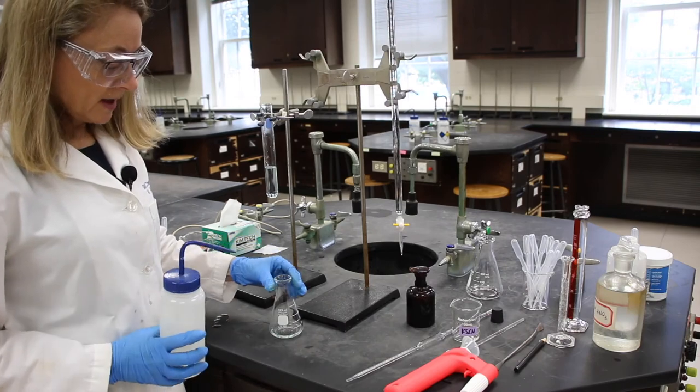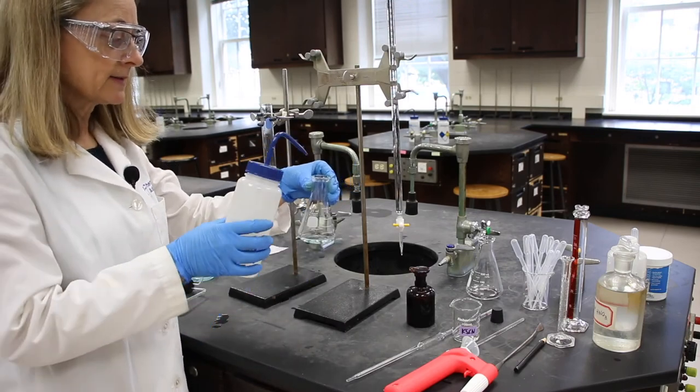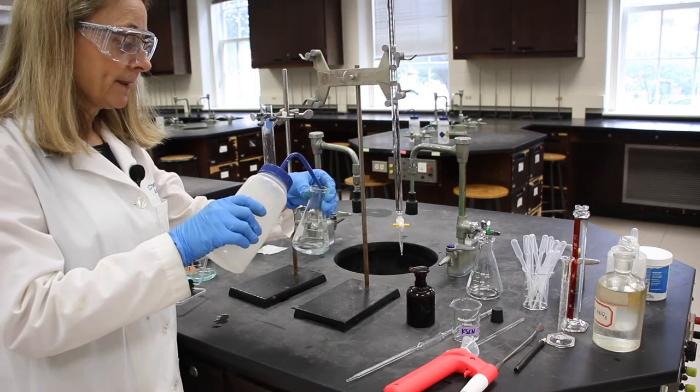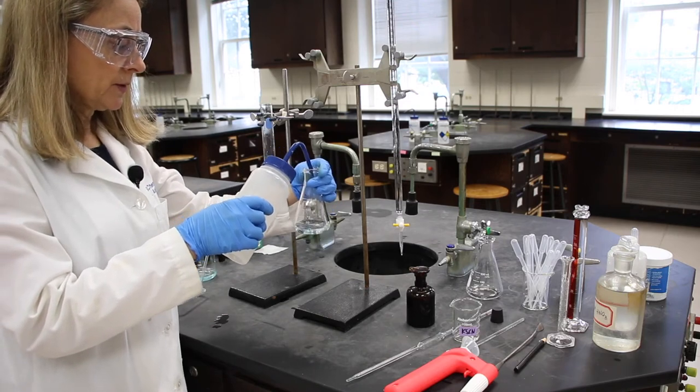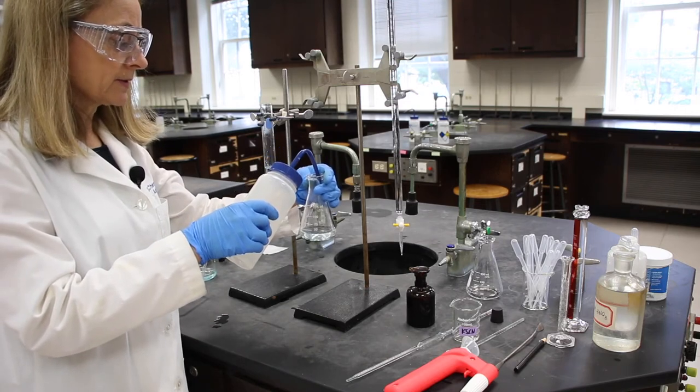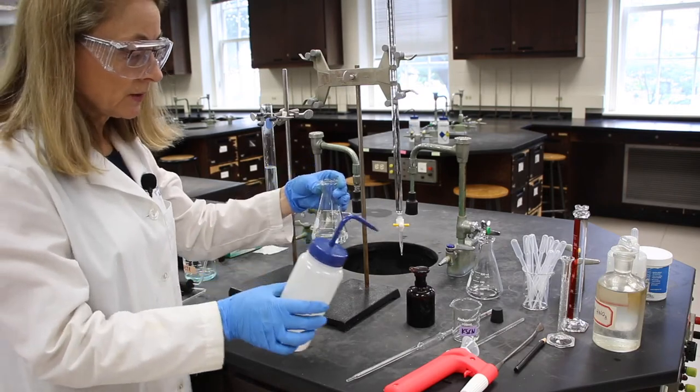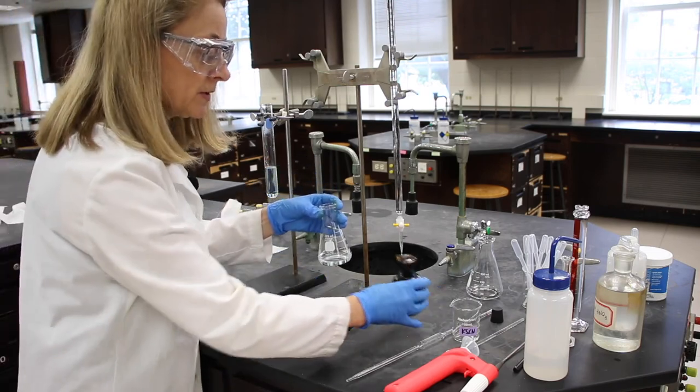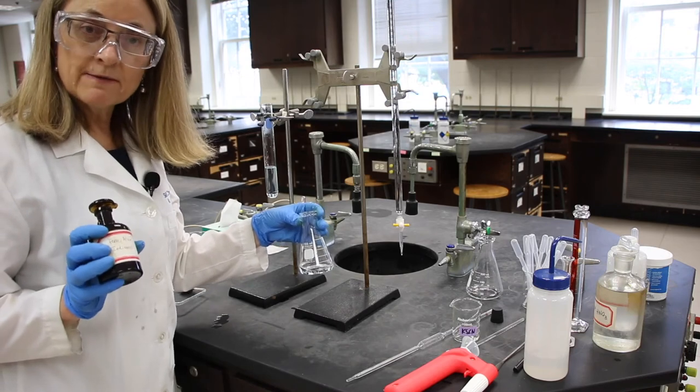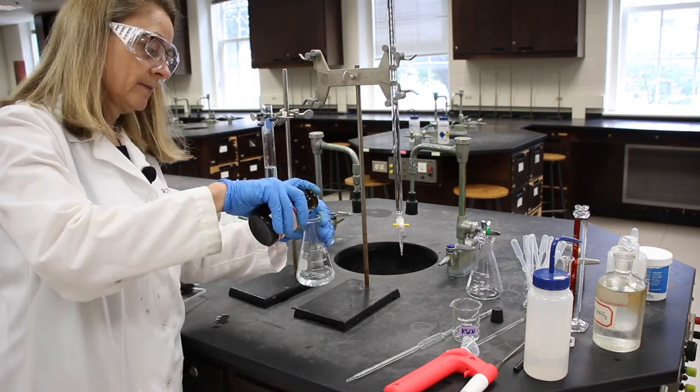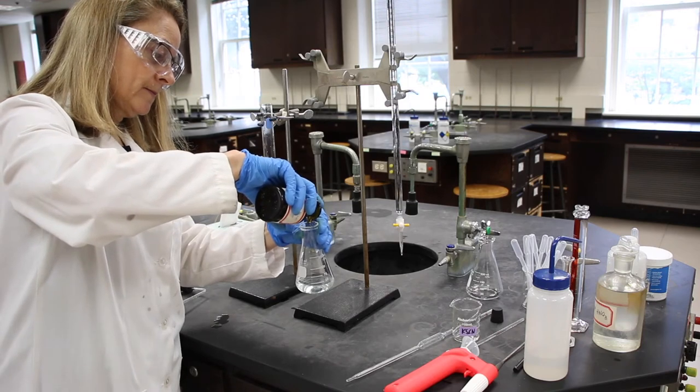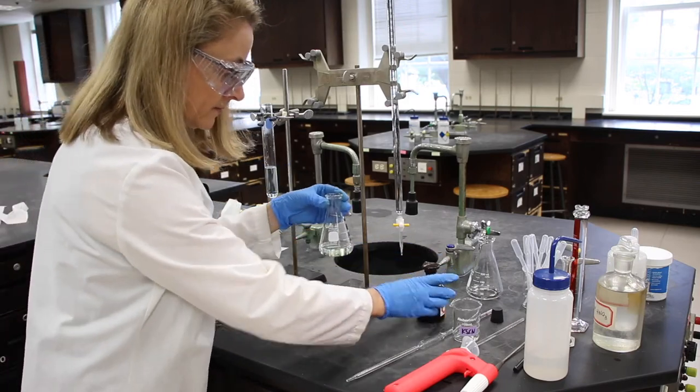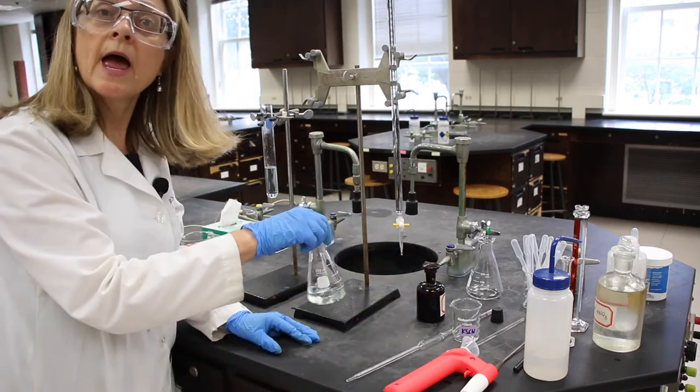Now that I've added my sample to the Erlenmeyer flask, I'm going to bring up my volume using DI water in the Erlenmeyer flask to, oh, between about 25 milliliters. It's not terribly important. We just need to have enough volume so that we can see a color change. I'm also going to add 15 drops of the ferric alum indicator. And I'll give it a swirl and now I'm ready to titrate.